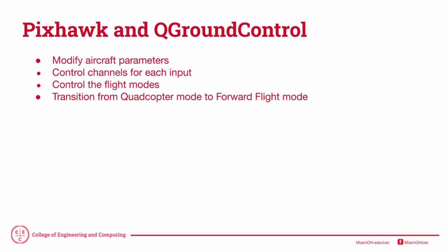We can also set different flight modes such as manual, stabilized, or acro mode, and other parameters. The main function of Q-Ground Control that we used was the transition from quadcopter mode to forward flight mode. Changing settings which control the VTOL transition, such as the minimum transition time or the motor ramp-up time, allowed us to create a smooth transition both into and out of vertical flight mode.